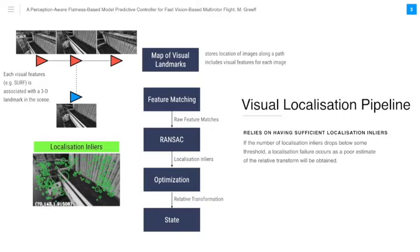The visual localization pipeline relies on producing a sufficient number of localization inliers. If the number of localization inliers drops below some threshold, a localization failure occurs as a poor estimate of the relative transformation will be obtained.